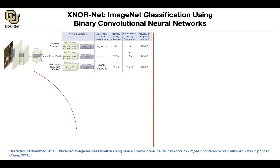In terms of memory saving, you're going to save 32x. In terms of computational saving, you're going to save 2x. The other step is to binarize your inputs as well. As you can guess, you're going to lose some accuracy, but you're going to have a lot of computational savings because rather than doing addition and subtraction you're doing XNOR operations, which are much faster.